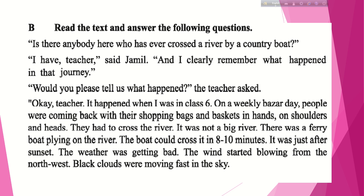Now page 45, Part B: Read the text and answer the following questions. The text reads: 'Is there anybody here who has ever crossed a river by a country boat?' 'I have,' the teacher said Jamie, 'and I clearly remember what happened in that journey.' 'Would you please tell us what happened?' the teacher asked. 'Okay teacher. It happened when I was in Class Six. On a weekly bazaar day, people were coming back with their shopping bags and baskets in hands, on shoulders and heads. They had to cross the river. It was not a big river — there was a ferry boat plying on the river. The boat could cross it in eight to ten minutes. It was just after sunset. The weather was getting bad. The wind started blowing from the northwest. Black clouds were moving fast in the sky.'